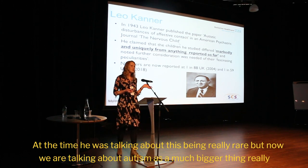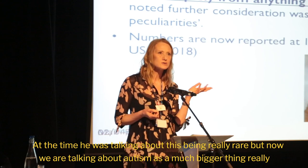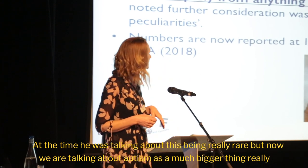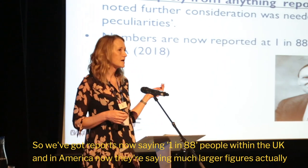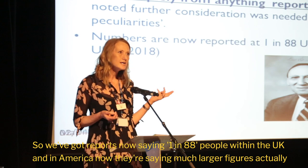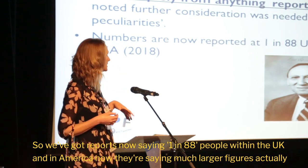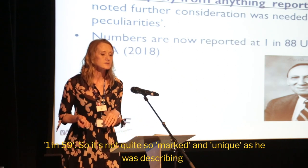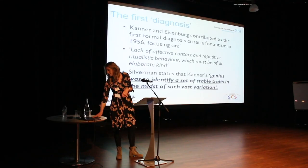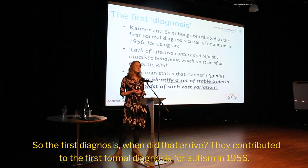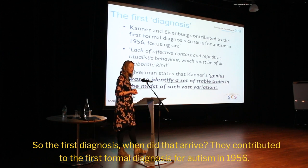At the time he was talking about this being really rare, but now we're talking about Autism as a much bigger thing. We've got reports saying 1 in 88 people within the UK, and in America now they're saying much larger figures — 1 in 59. So it's not quite so marked and unique as he was describing. The first formal diagnosis for Autism arrived in 1956.